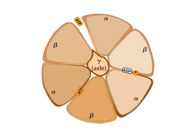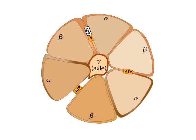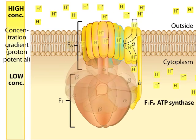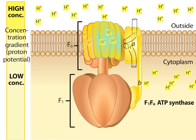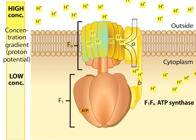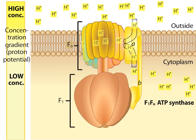An ATP molecule is produced for every three protons that cross the membrane through the ATP synthase channel. This function, in which a proton potential powers ATP production, is highly conserved.